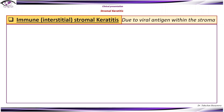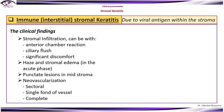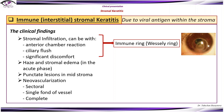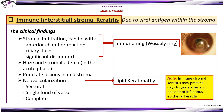Immune stromal keratitis can be due to viral antigen within the stroma. Clinical findings are stromal infiltration, haze and stromal edema, punctate lesions in mid-stroma, as well as neovascularization, which can be sectoral, a single front of vessel, or complete neovascularization of the cornea. An immune reaction would be characterized clinically with an immune ring — the Wessely ring — which can be singular or multiple, most commonly found in the mid-stroma of the central or paracentral cornea. Neovascularization can also lead to lipid keratopathy with further scarring and loss of vision. Note that immune stromal keratitis may present days or years after an episode of infectious epithelial keratitis.